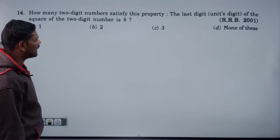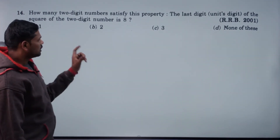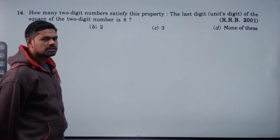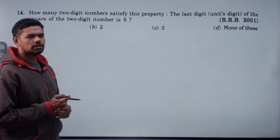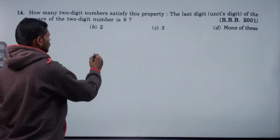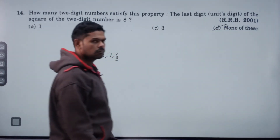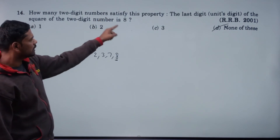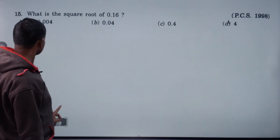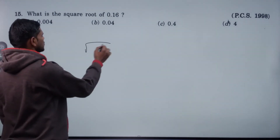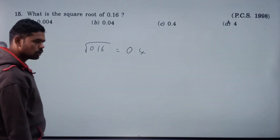How many 2-digit numbers satisfy this property — the last digit of the square of the 2-digit number is 8? Perfect squares are never ending with 2, 3, 7, or 8. 8 is not equal to 1 squared, so no 2-digit number has last digit 8 in its square. The last digit is 4.